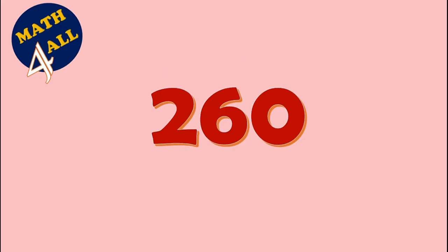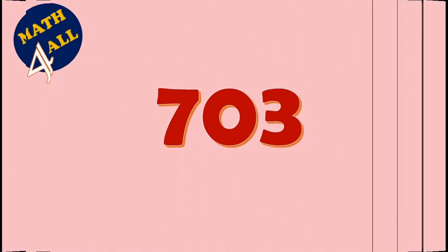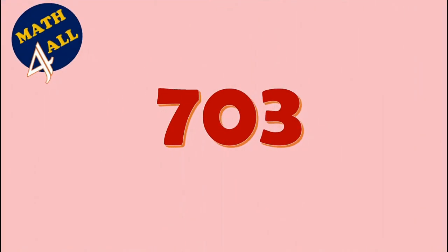Here we go. We will put the place value and the value of each digit. In this case, you will ignore the zero. We have two in the hundreds place, which means two hundred, and six in the tens place, which means sixty. So the number is 260.